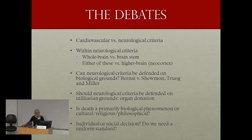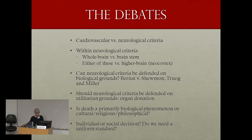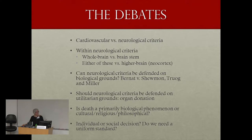Bernat, Schuman, Truog and Miller all assume death is biological, but disagree about the best biological criterion. Can neurological criteria be defended? Bernat thinks it can; Schuman, Truog and Miller think it can't. Then there's the question of whether we should bring in utilitarian considerations — is it relevant that organ donation depends on using brain death as the criterion? Schuman dismisses utilitarian reasons, suggesting we'd next be killing people to take five organs to save others. There's also debate about whether abandoning brain death would actually harm organ donation.